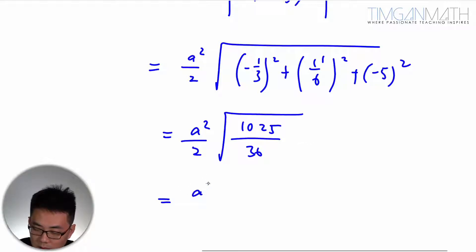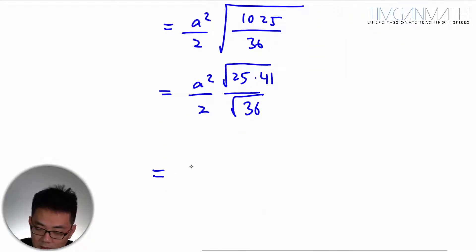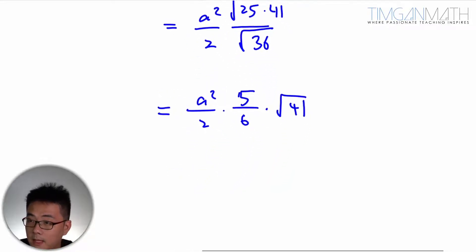This will just be similar with what we did just now. So square root 36 is just 6. 1025 can be divided by 25, which is 25 and 41. So this case here will give us A squared over 2 times 5 over 6 times square root of 41. So that will give us 5A squared over 12 square root of 41 square units.